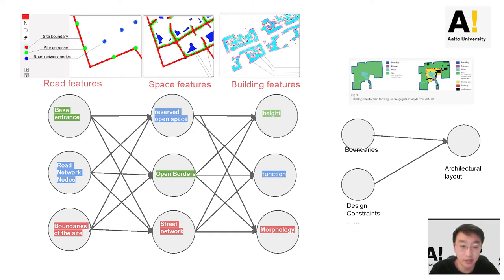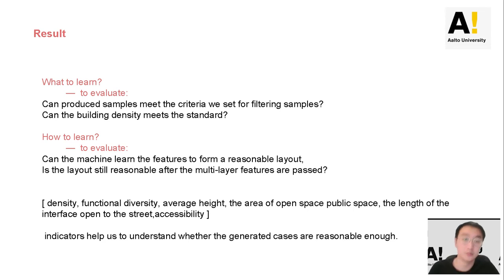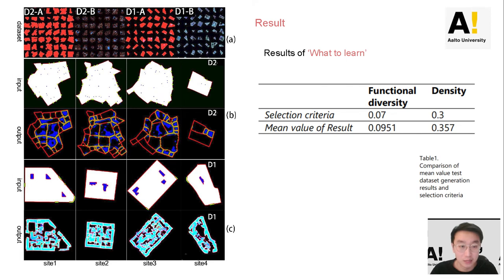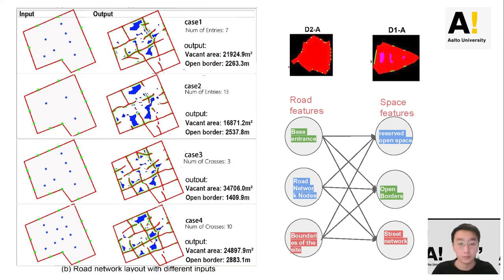Can the machine learn the relationships between these features to generate reasonable urban designs? This is our automatically labeled dataset proof of concept. We store features in RGB color channels. We tested whether GAN can produce samples meeting our standard for qualifying training samples, and whether the machine can learn features to form a reasonable layout. We chose four different site outline conditions for the experiment. The average density and functional diversity of buildings were verified using a test dataset of 200 samples, and we obtained greater average building density and more building functional diversity in the machine-produced results.